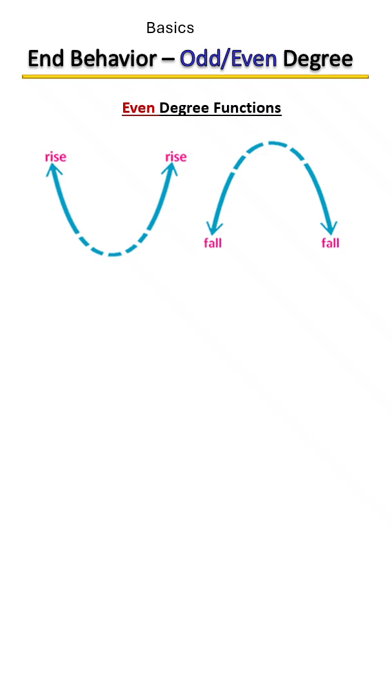So recap: even degree, both ends up or both ends down. Odd degree, S shape, one end up and one end down.